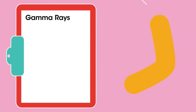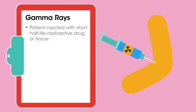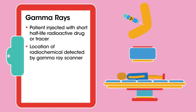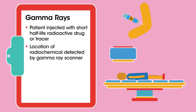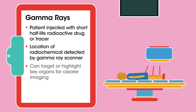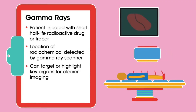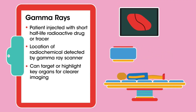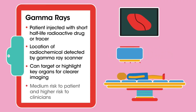Gamma rays. This technique uses short half-life radionuclides which are injected into the body, and then their location or distribution is detected by the emitted gamma rays and mapped by external equipment. This can build up a 3D image of internal organs. Some risk to all concerned in this case.